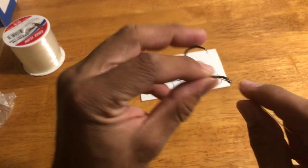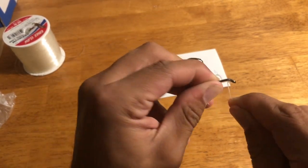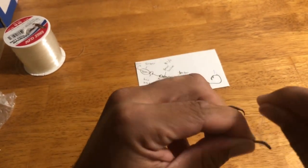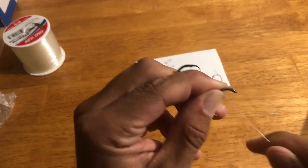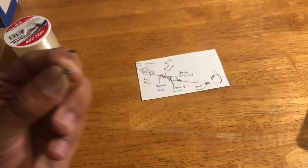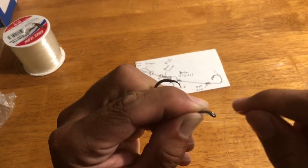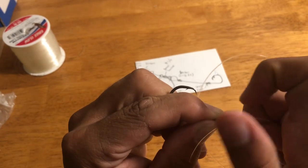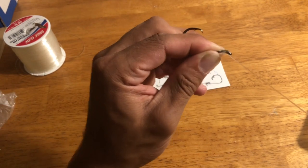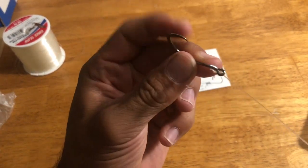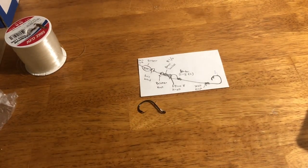And once you have that, you wrap it around. I like to do seven times, two, three, four, five, six, and seven. You hold onto that. You find the other end and you put it through the eye. Take that and you pull it all the way through until it cinches. And now look at that. You have a pretty little snell knot.